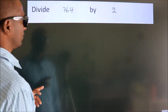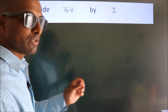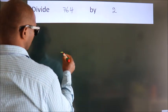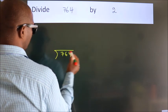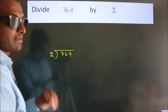Divide 764 by 2. To do this division, we should frame it in this way. 764 here, 2 here. This is your step 1.